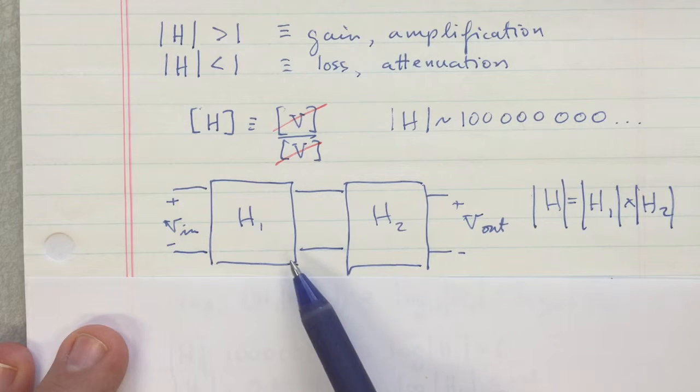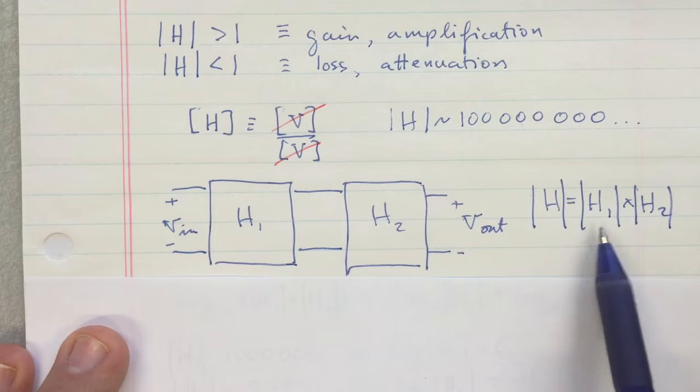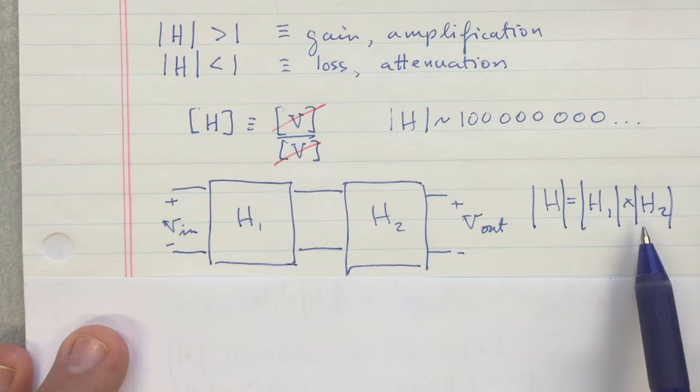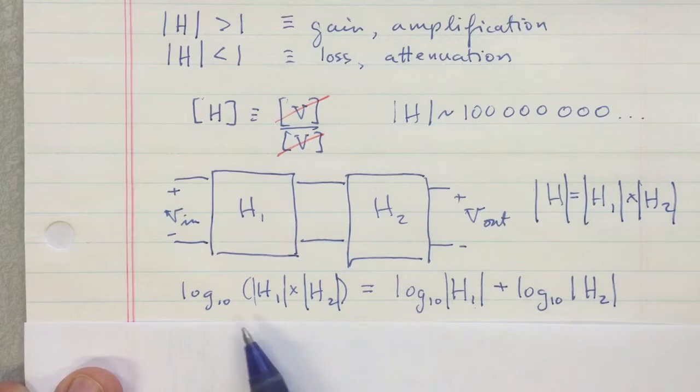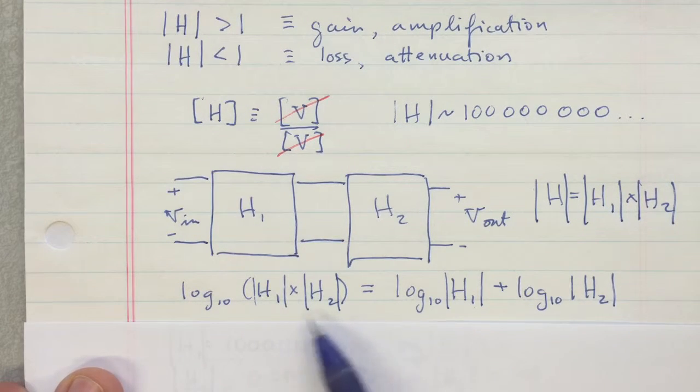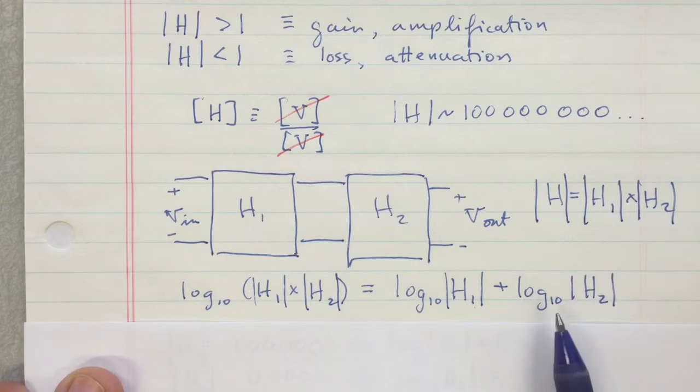the voltages are multiplied by the transfer function in each case, so the total magnitude is the product of the two component transfer functions. If you take a log of that, you can solve that problem because then it just becomes the sum, and sums are easier to take than products, so that's pretty nice.